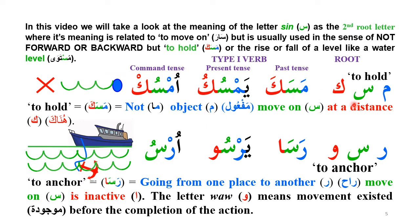In this video we look at the situation when Seen is the middle letter. In 'Masaka,' it's like holding — not going forward or backward. Meem is the object (Mafuul), Seen is Sara, and Kaf means 'Hunaka,' or at a distance. The Kaf, when it is the third letter, has a small Kaf inside a bigger Kaf, indicating distance — things appear smaller at a distance. So Huna means 'here' and Hunaka means 'there,' just by the addition of Kaf.